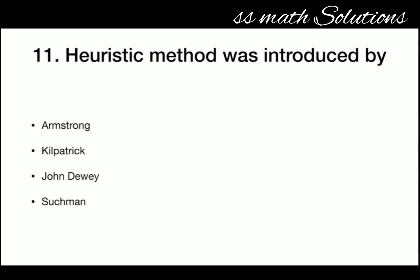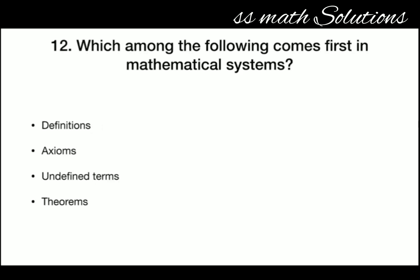Which among the following comes first in mathematical systems — definitions, axioms, undefined terms, or theorems? The answer is undefined terms. Undefined terms come first in mathematical systems.